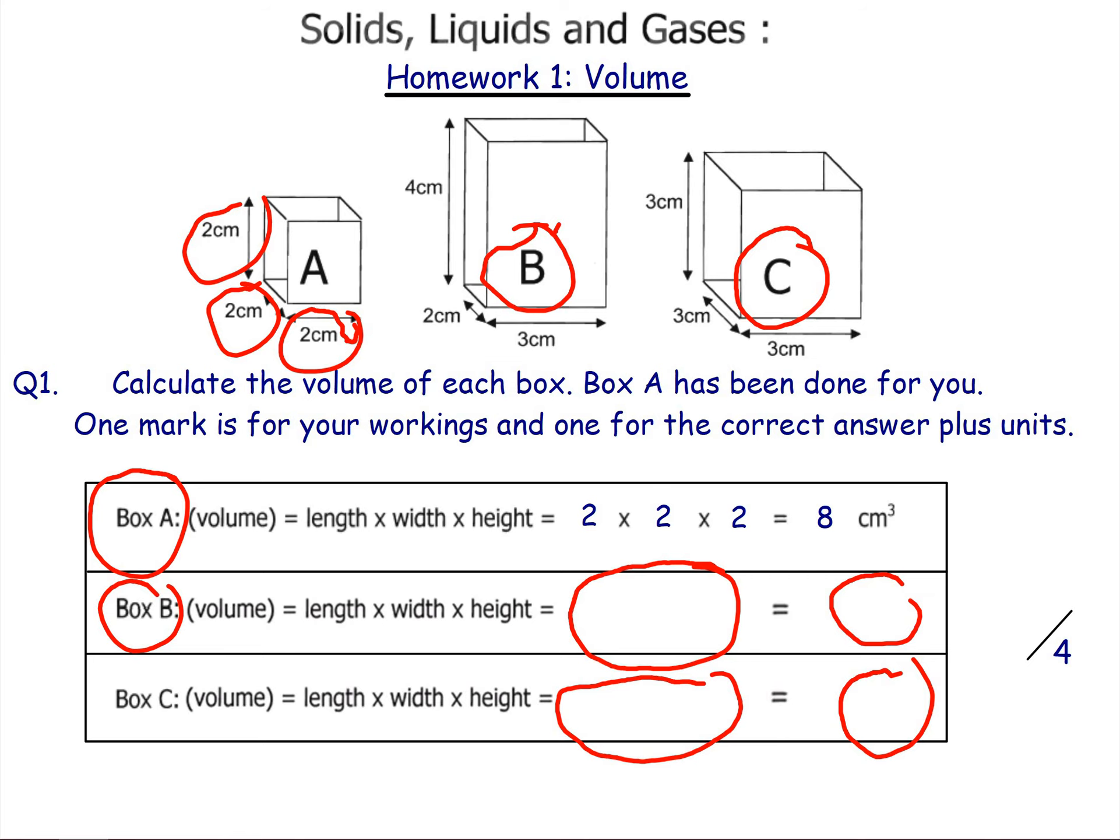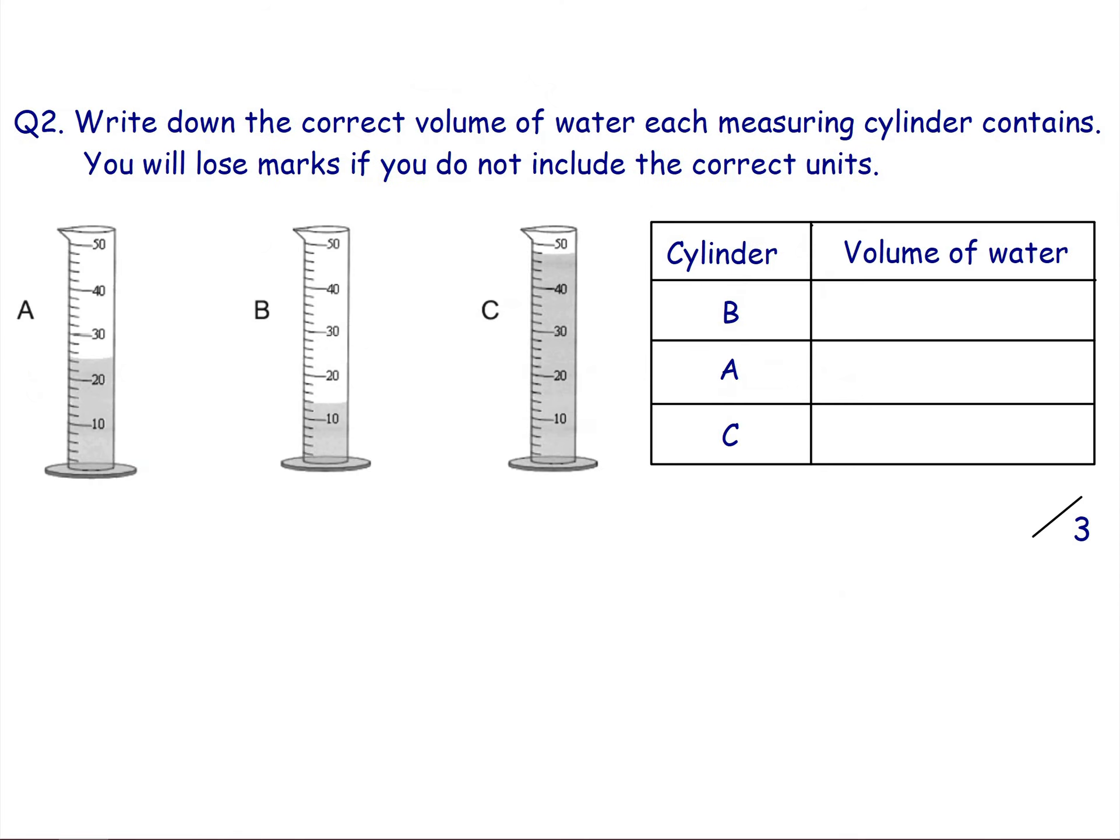Write down the correct volumes for each of the measuring cylinders. Because look out, cylinder B is this one here, isn't it? You have to work out what the volume is right there. Moving on.